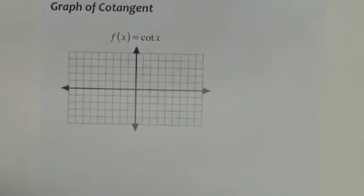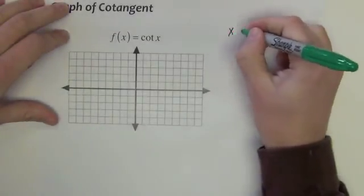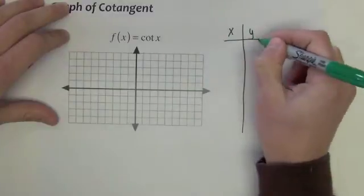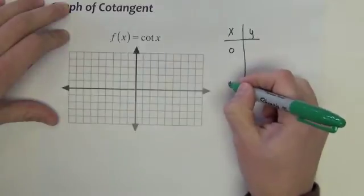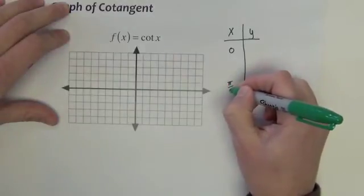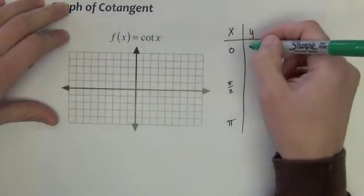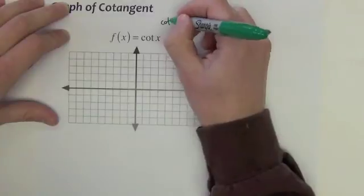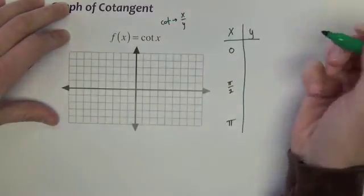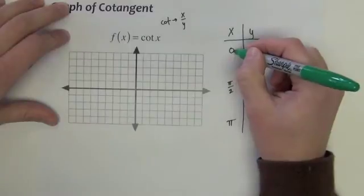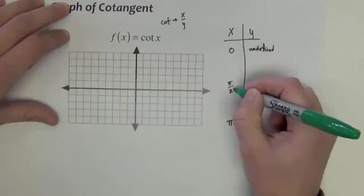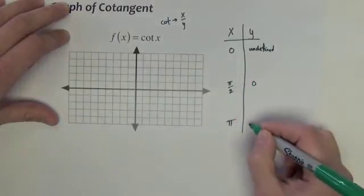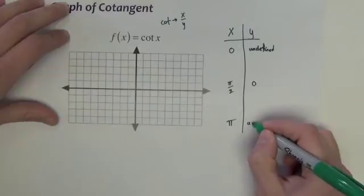Let's look at the graph of cotangent x. Again, we'll take a table of values. Pick anything you want. This time, I'm going to go with 0 to start. That would put π/2 in the middle and π at the end. Notice with cotangent, we're looking at x divided by y. At 0, it's going to be 1 divided by 0, which is undefined. At π/2, it's going to be 0 divided by 1, which is 0. And at π, it's going to be the same as at 0, undefined.